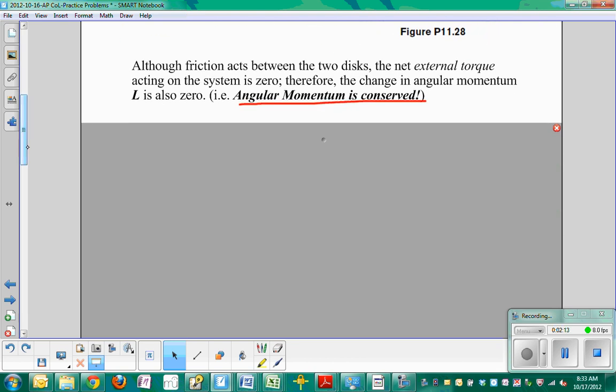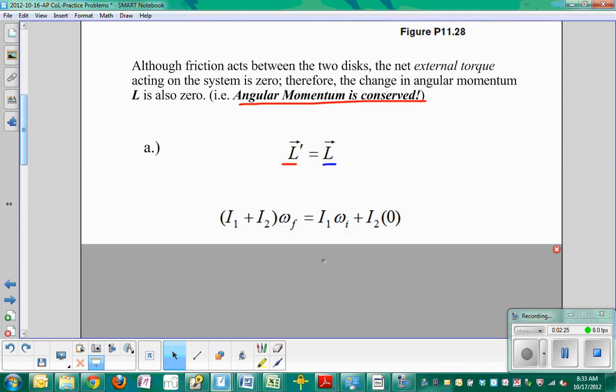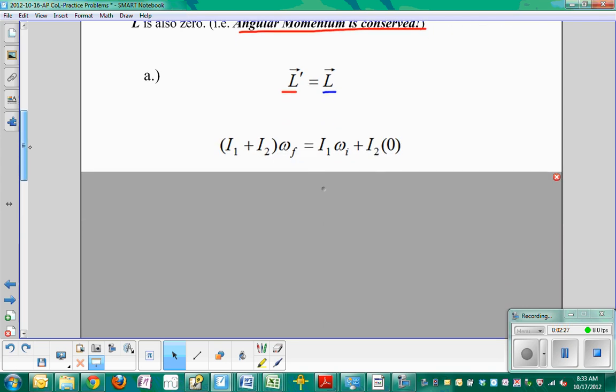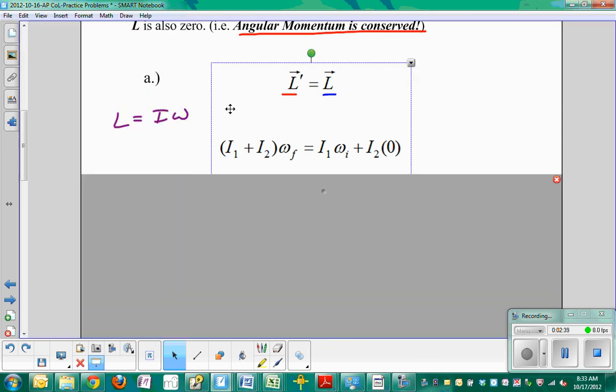Alright, so sliding down to do a little bit of the mathy stuff, we know that L prime is equal to L, that just means that the final angular momentum is equal to the initial angular momentum. Alright, so now, let's just put together some expressions. We know in general that L is equal to I omega, right, so here is L for disk one when it's rotating all by itself.